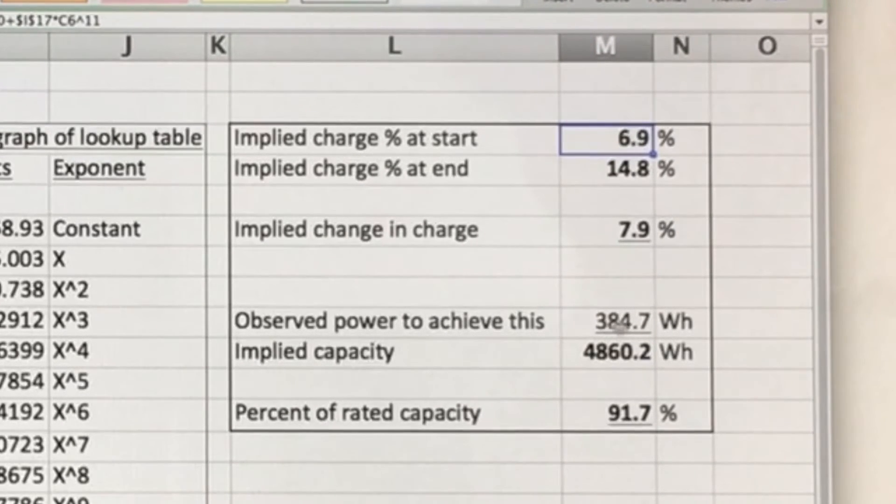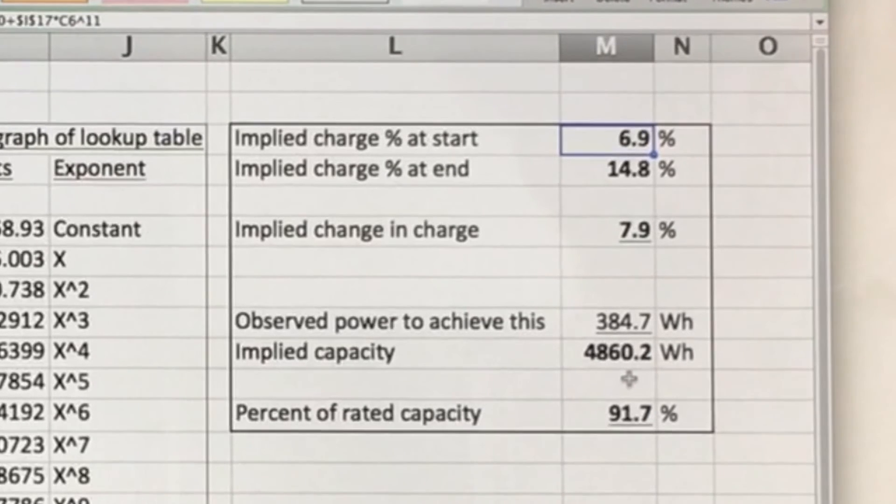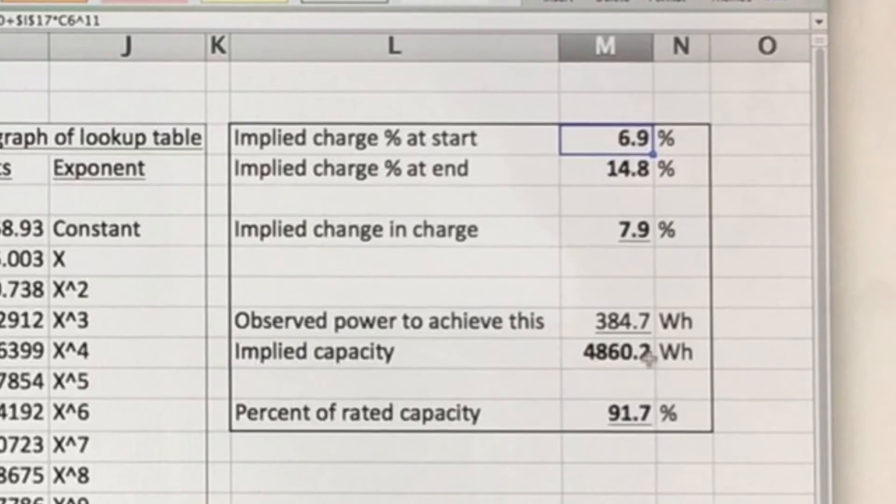Yet the total capacity we need to divide 384.7 watt-hours by 7.9%. And we get 4860.2 watt-hours in total. And that's actually 91.7% of its rated capacity when new. And this is four years later. So I think that's doing quite well.